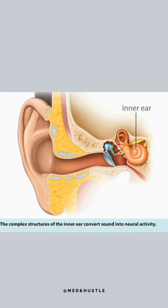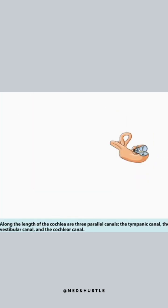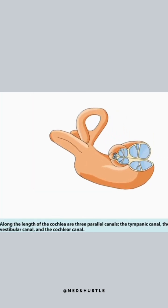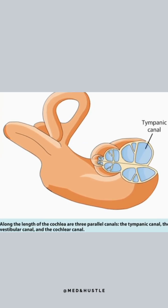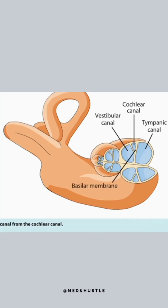The complex structures of the inner ear convert sound into neural activity. In mammals, the auditory portion of the inner ear is a coiled structure called the cochlea. The region nearest the oval window membrane is the base of the spiral; the other end, or top, is referred to as the apex. Along the length of the cochlea are three parallel canals: the tympanic canal, the vestibular canal, and the cochlear canal. The principal elements for converting sounds into neural activity are found on the basilar membrane, a flexible structure that separates the tympanic canal from the cochlear canal.